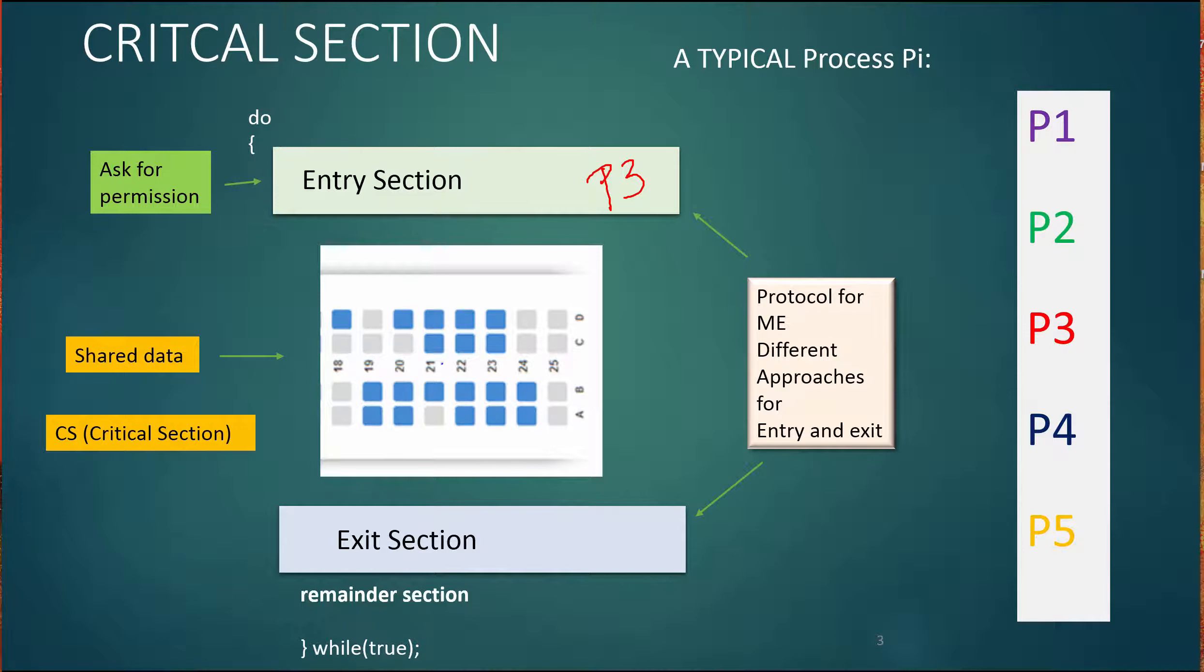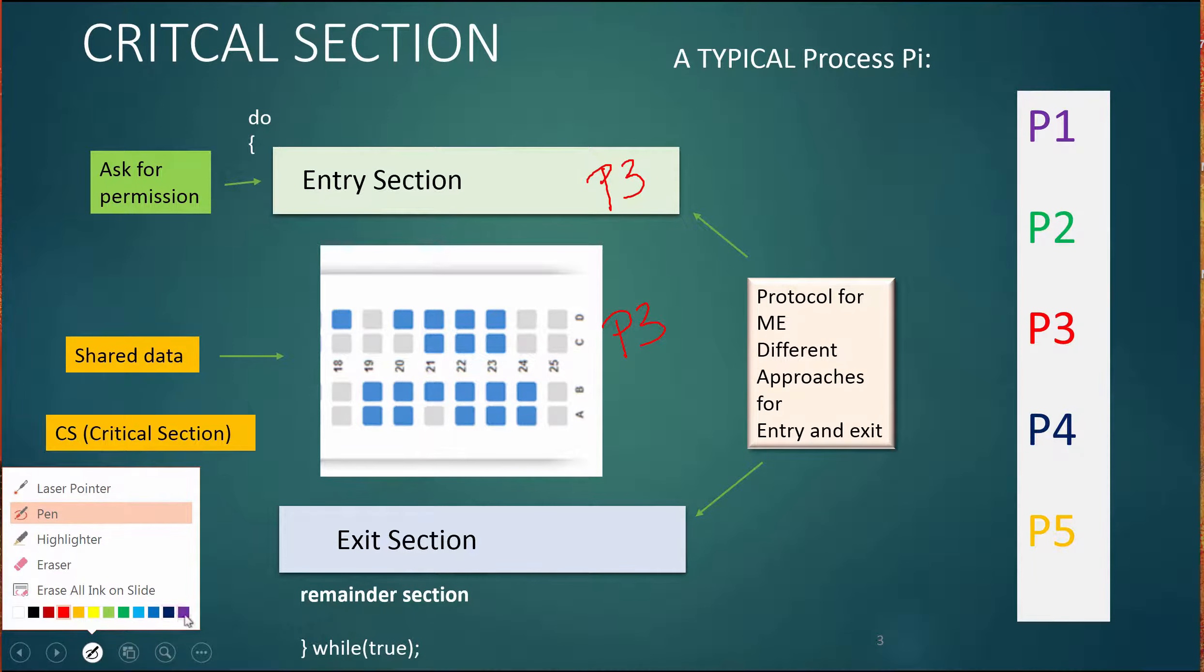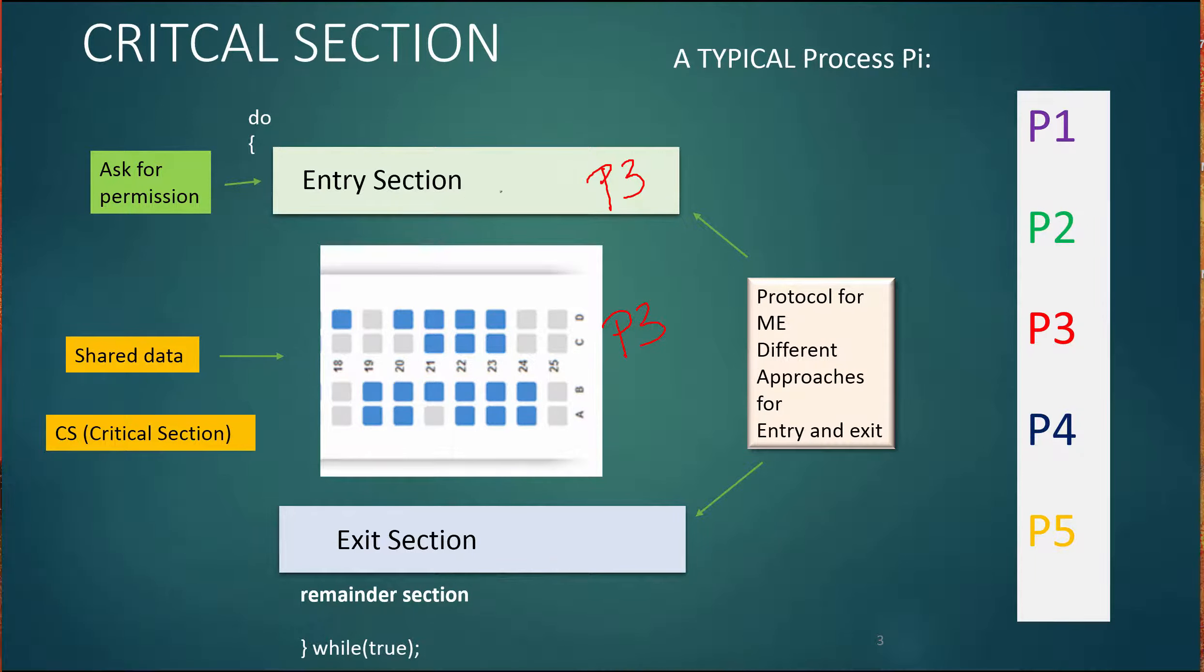And there were no other processes in there picking their seat or anything. So P3 would be in here picking the seat. And then if another process were to come along, say P1 comes along and would like to go and pick a seat, P1 would come here to the entry code and would ask permission. And it would find that the critical section is not available because there is another process in there.